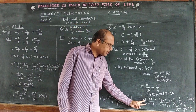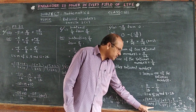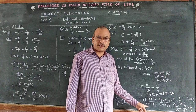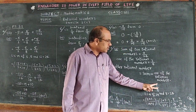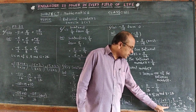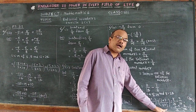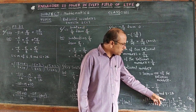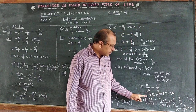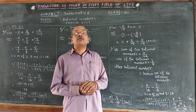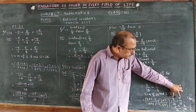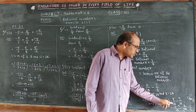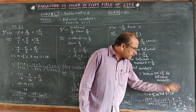The LCM of 24 and 8 is 24. We want to see 24 in every denominator. For 11 by 24: 24 times 1 is 24, so 1 is written for the multiplication, and same 1 in the numerator. For 3 by 8: 8 times 3 is 24, so 3 is written for the multiplication, same 3 in the numerator. So we get 11 by 24 minus 9 by 24.